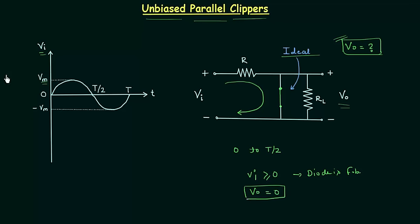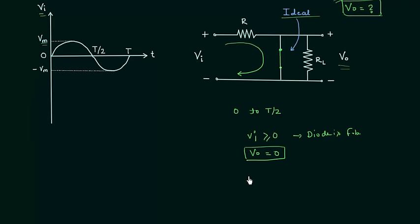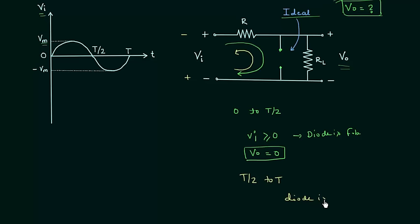Now I will calculate the output voltage for the second half cycle from T/2 to T. The polarity now reverses to minus-plus, because the input voltage Vi is negative in this half cycle. The direction of current is now anti-clockwise, which is opposite to the direction of the arrow in the diode symbol. So the diode is reverse biased.